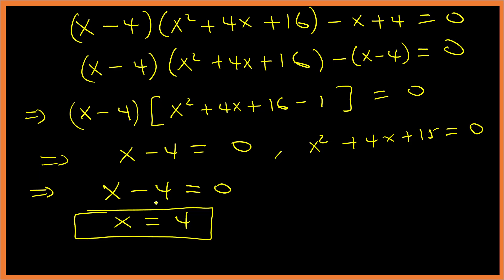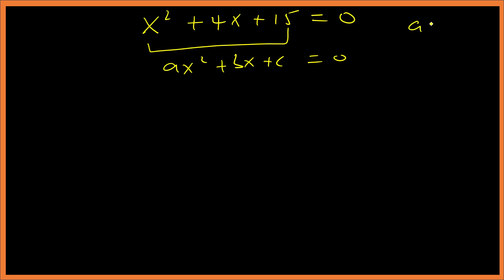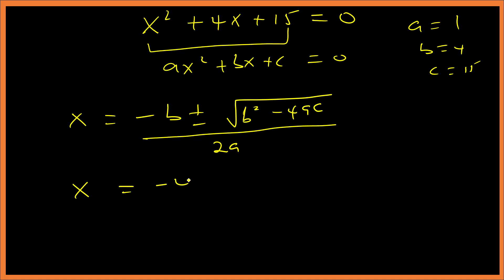Now let's solve x squared plus 4x plus 15 equals 0. Comparing with the general quadratic formula where a equals 1, b equals 4, and c equals 15, we use x equals negative b plus or minus square root of b squared minus 4ac, all over 2a.